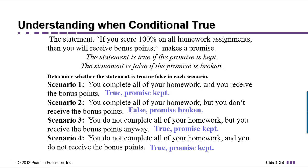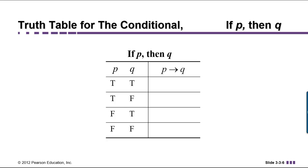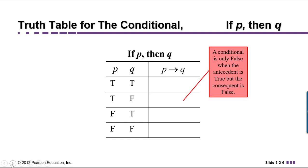Observe that the only time the statement turned out to be false was when the antecedent was true — you completed all your homework — but the consequent, the part following 'then,' you will receive bonus points, never happened and turned out to be false. In other words, if we were to make a truth table for the conditional, the only time we would have a false statement is if the antecedent were true but the consequent were false. All other scenarios would be true.